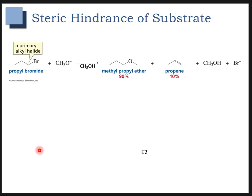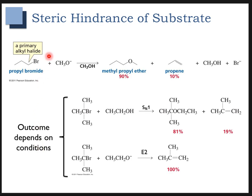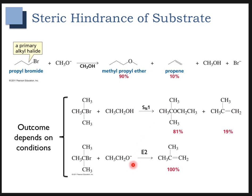We also have to consider the steric hindrance of the substrate. Looking at this primary alkyl halide, it's going to do primarily substitution if we use methoxide, with some elimination as a minor product. As we make the substrate bulkier — in this case a tertiary alkyl bromide — now we're going to see SN1, and we'll also start to see some E2 if we have a strong base. A tertiary alkyl bromide with a weak base is going to give us some SN1.